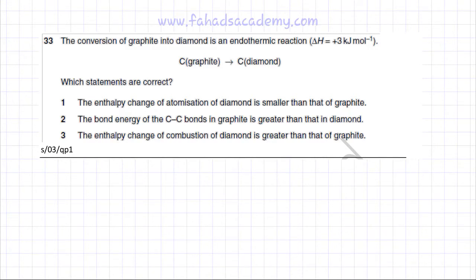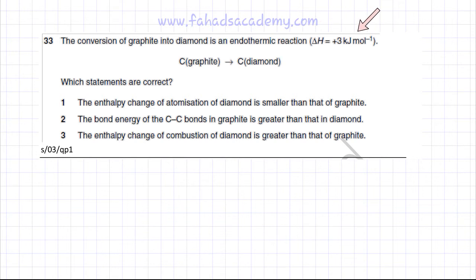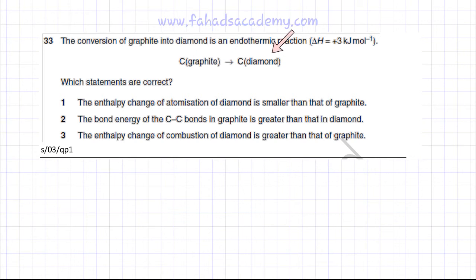In this chemical energetics question, the conversion of graphite into diamond is an endothermic reaction, so the enthalpy is +3 kJ per mole — converting from graphite to diamond.